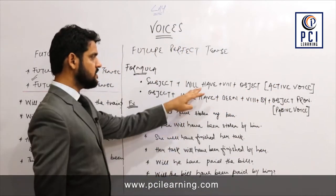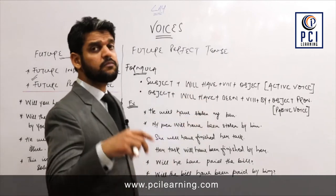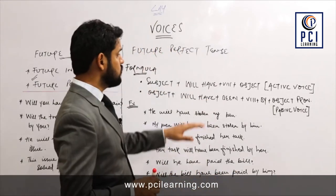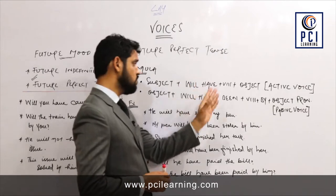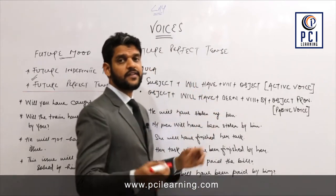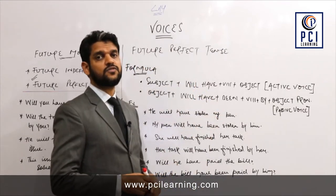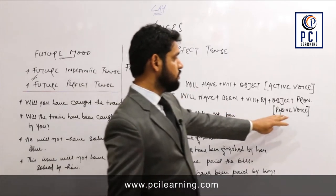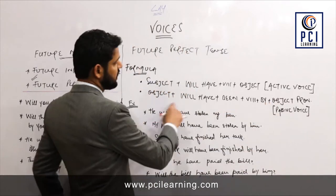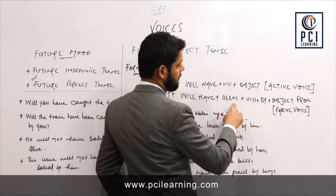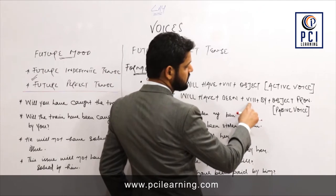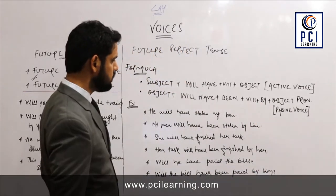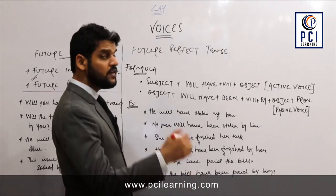Sometimes you may also see 'shall have' in the condition, but normally 90 to 99 percent of the time we use 'will have'. Now the formula of passive voice will be: object plus will have plus been plus third form of verb plus by plus object pronoun.